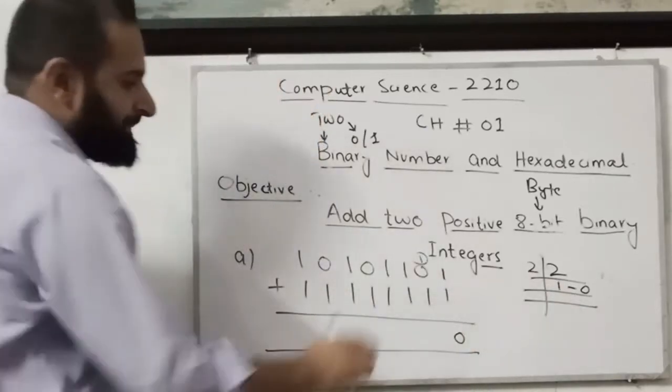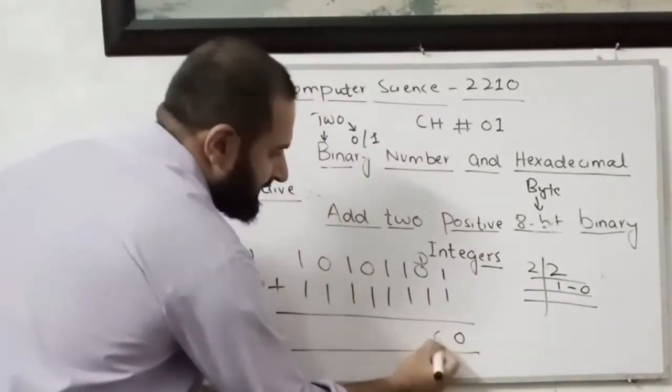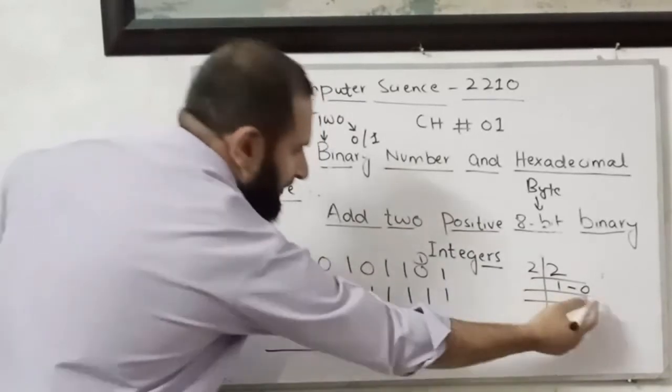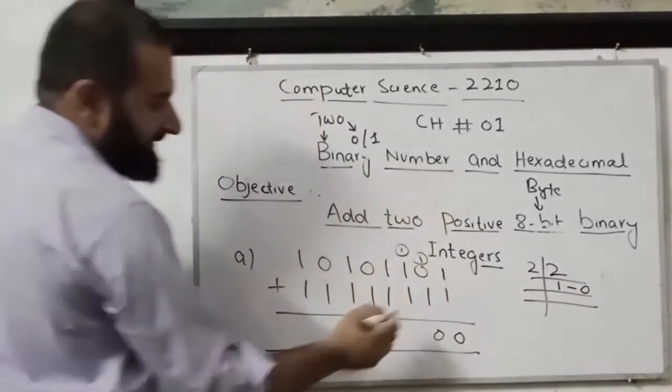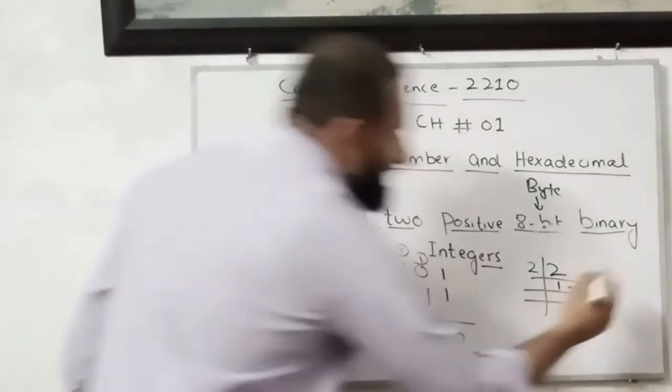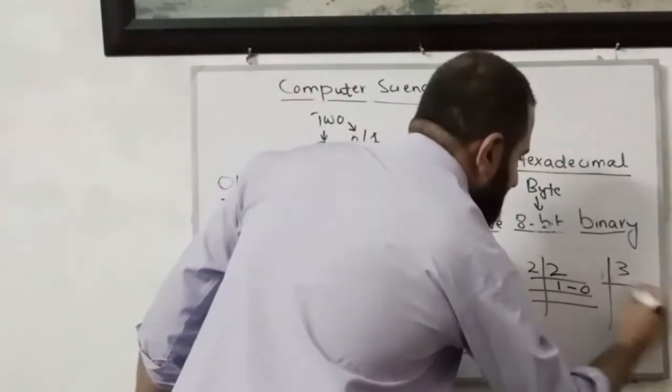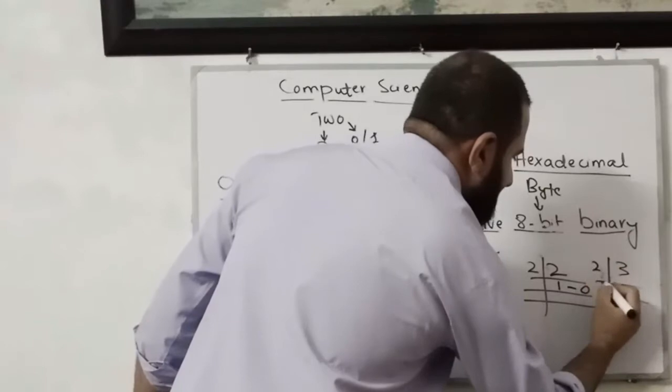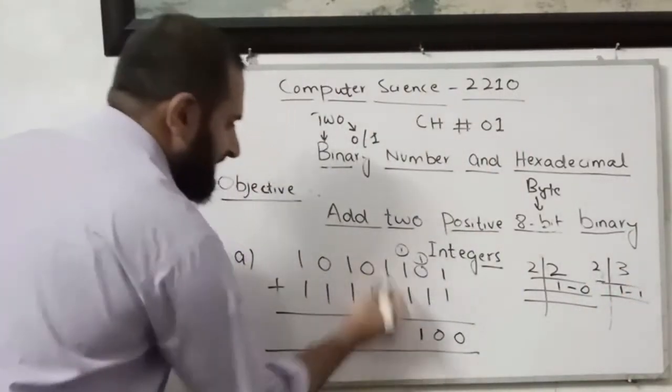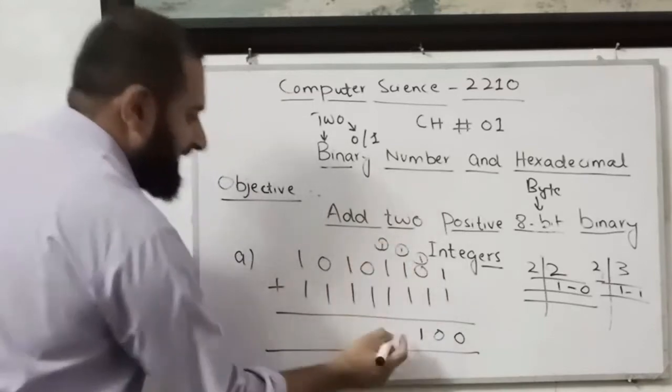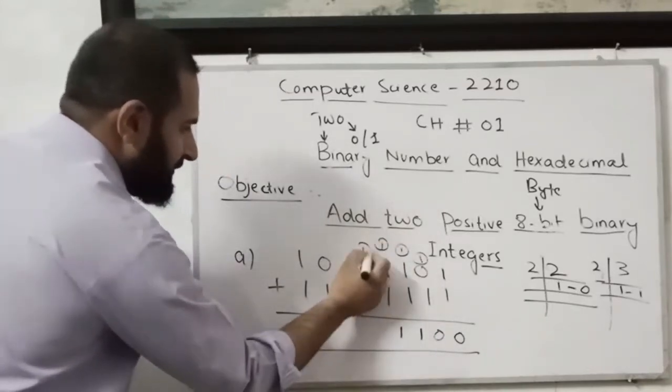This one will come over here as a carry. So 1 plus 1 again equals 2, remainder 0. 0 will go here, remainder will come over here, and the carry will go over here. Now 1 plus 1 plus 1 is 3. So I will write over here 3. Let me convert this using successive division. 2 goes into 3 once with remainder 1. So 1 will go here. This is again 3, then 1 will go over here.